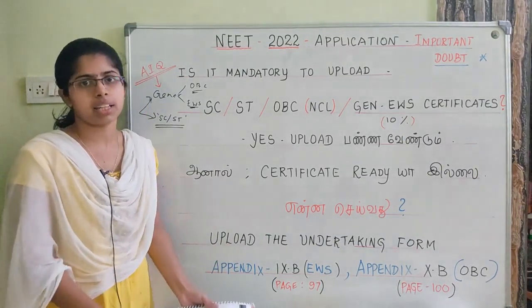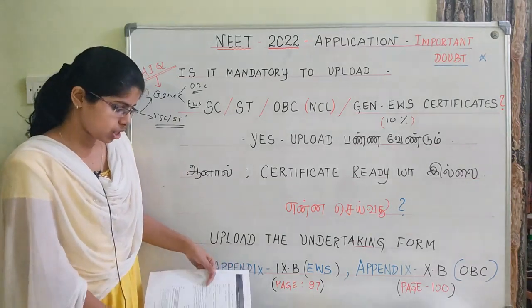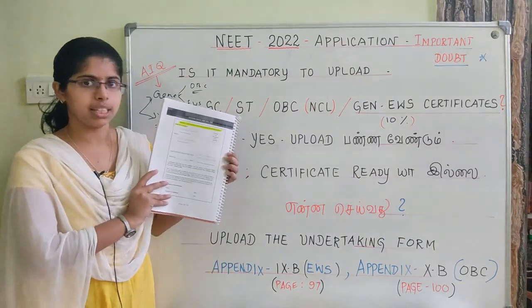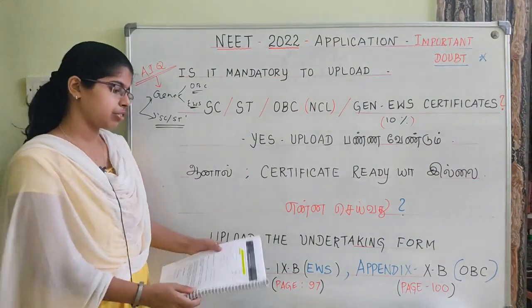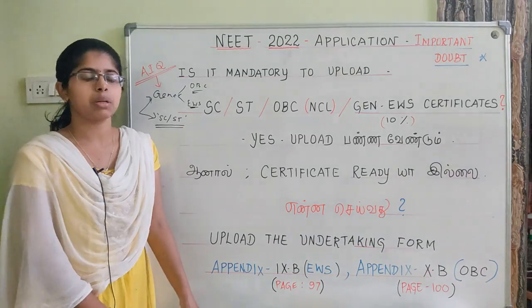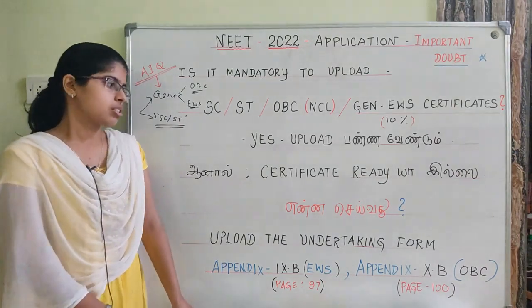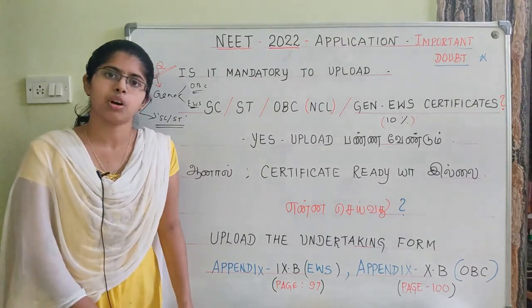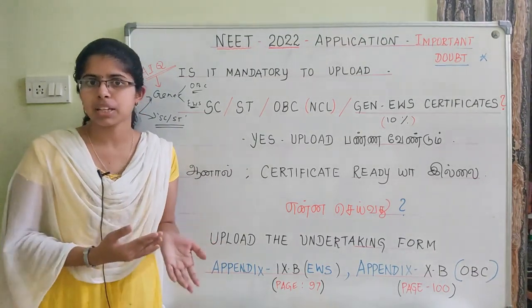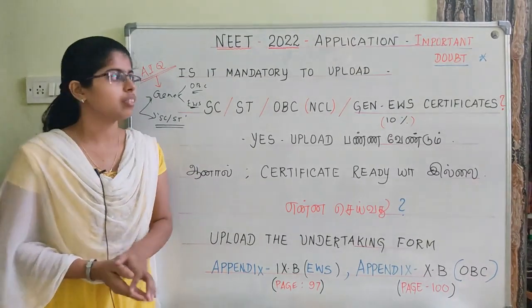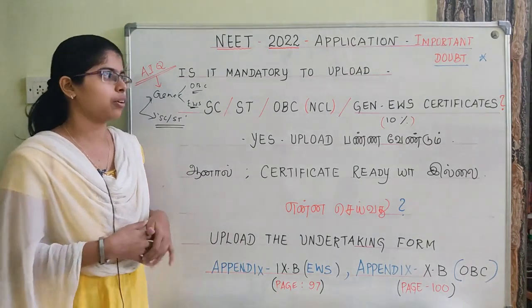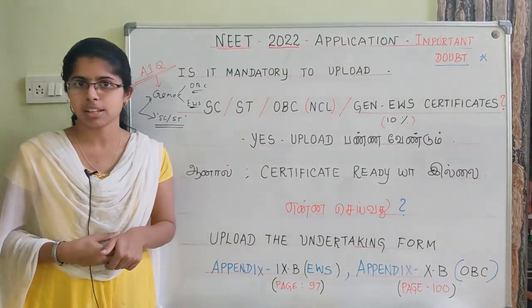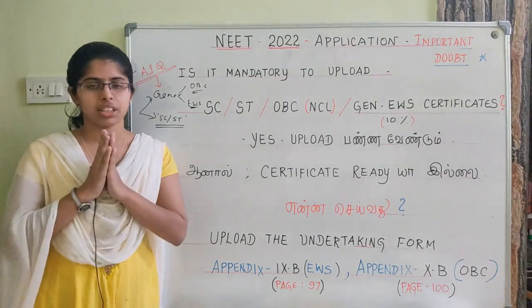Appendix 10B is for the OBC category, found on page number 100. There is a form on page number 100 with similar details to the last form. You can download the form, fill it, and upload it to use this benefit. If you use it, you will be able to get a seat in All India Quota. So this is the certificate process for clearing doubts. You can download it, upload it, and use it.